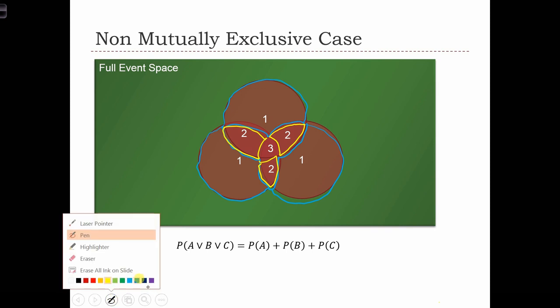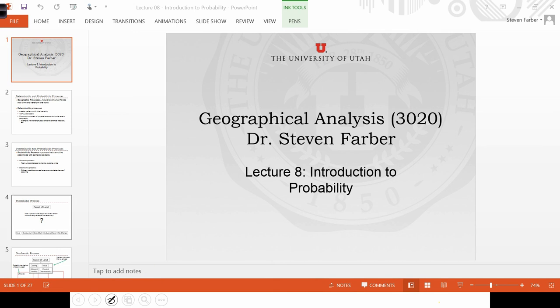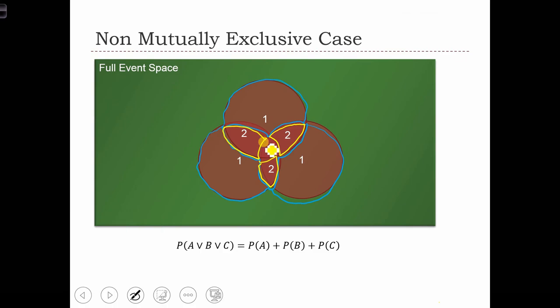Now, because the three events actually intersect and include that central area, what have I done here? Well, then we're also including three counts of that middle area.